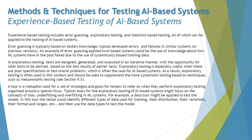Error guessing is typically based on the tester's knowledge of typical developer errors and failures in similar systems or previous versions. An example applied to an AI-based system could be using knowledge of how ML systems have failed due to systematically biased training data. The technique is well-defined but gets blended with the context of AI-based systems — past experience here is about how an AI-based system works and how ML models behave with different biased training data.